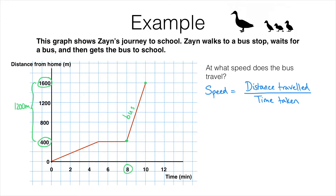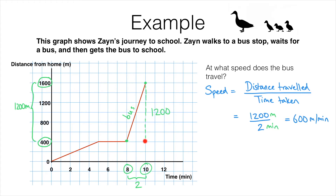Plugging those numbers into the formula: 1,200 meters divided by 2 minutes gives 600 meters per minute. This is exactly the gradient of that line on the graph — the vertical change is 1,200 and the horizontal change is 2 minutes, so you're doing 1,200 divided by 2, exactly this calculation, to get the speed.